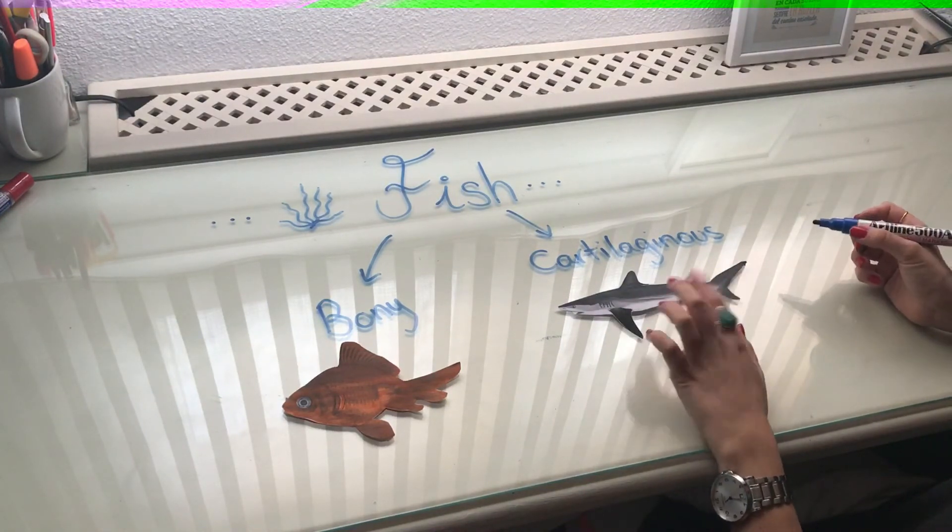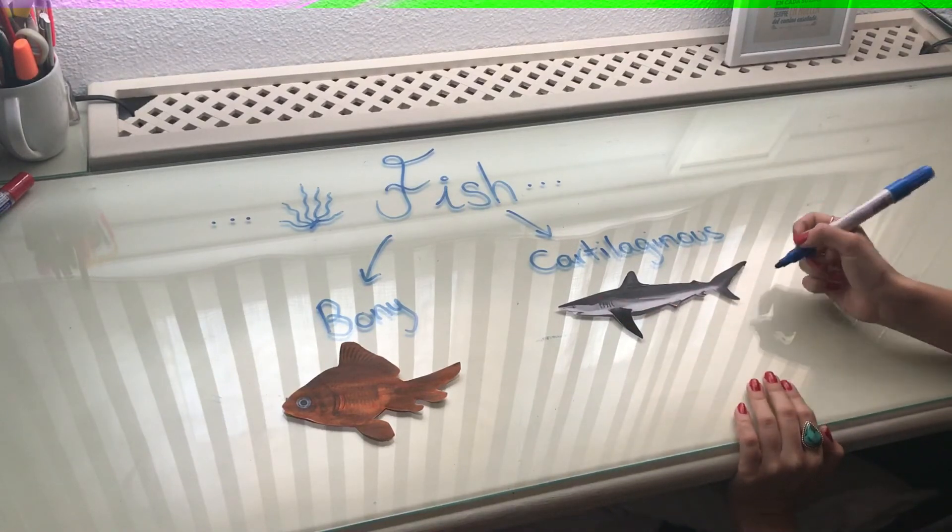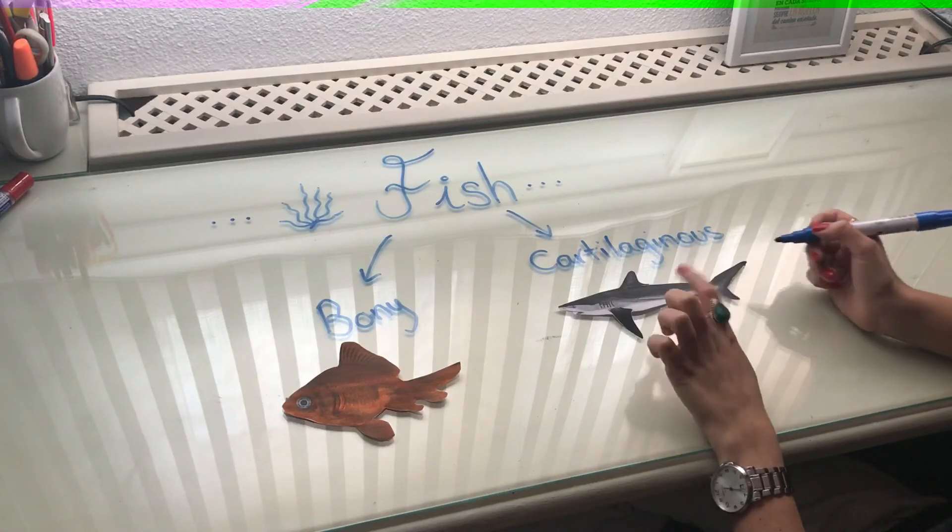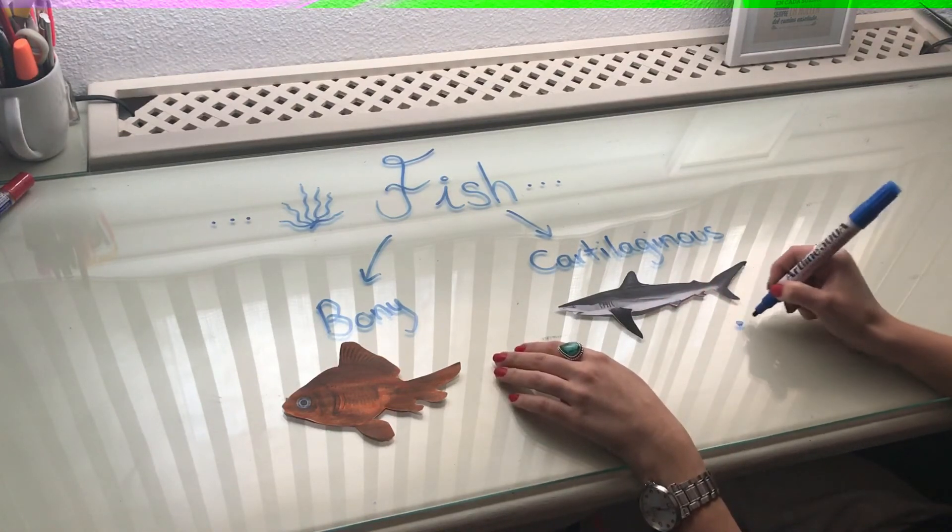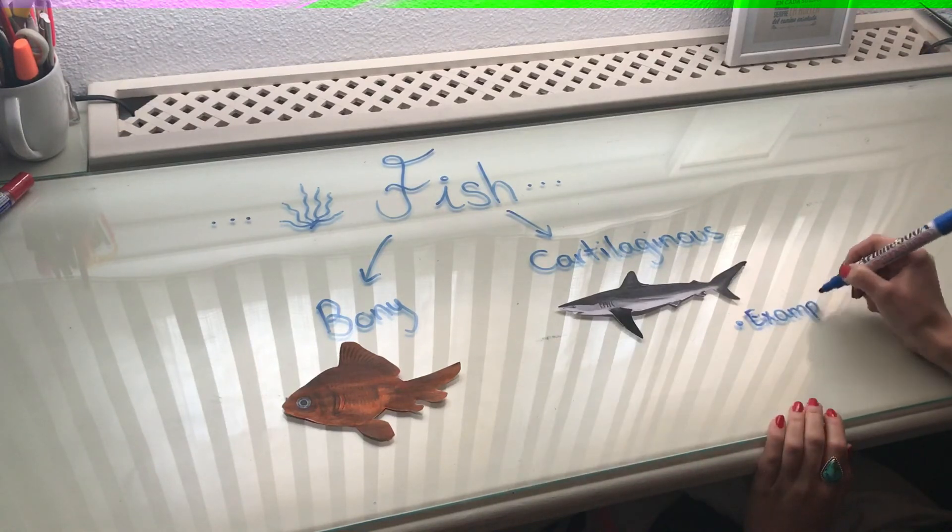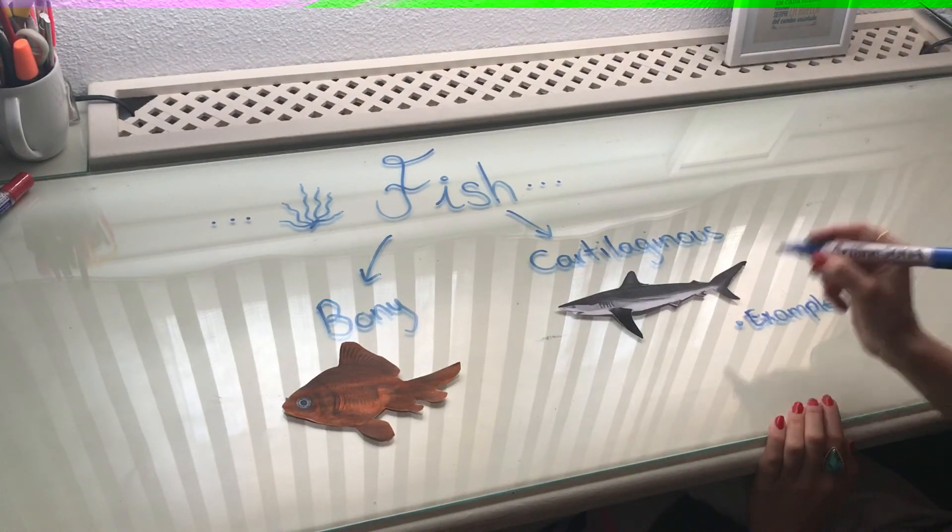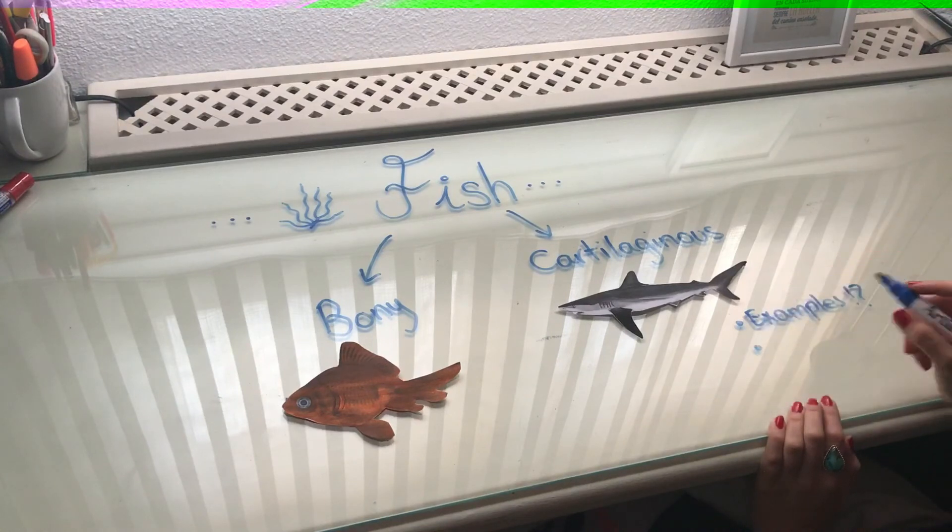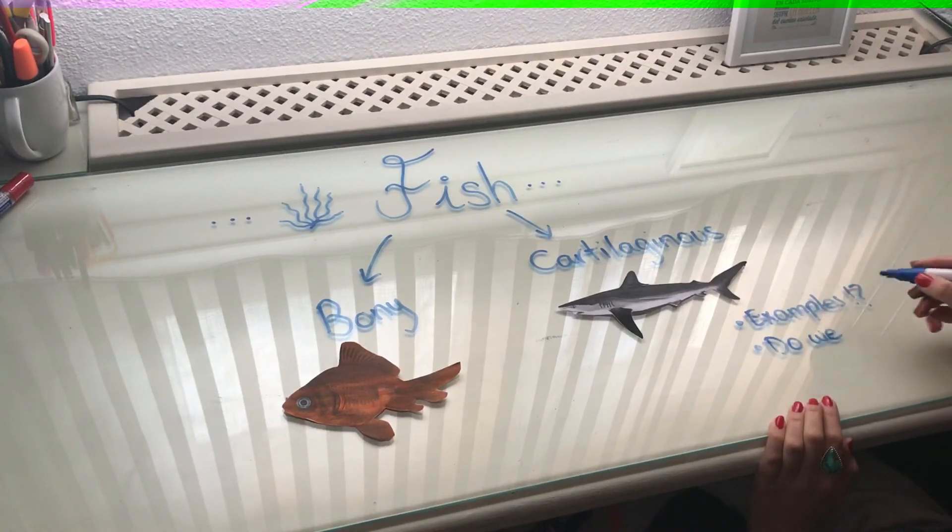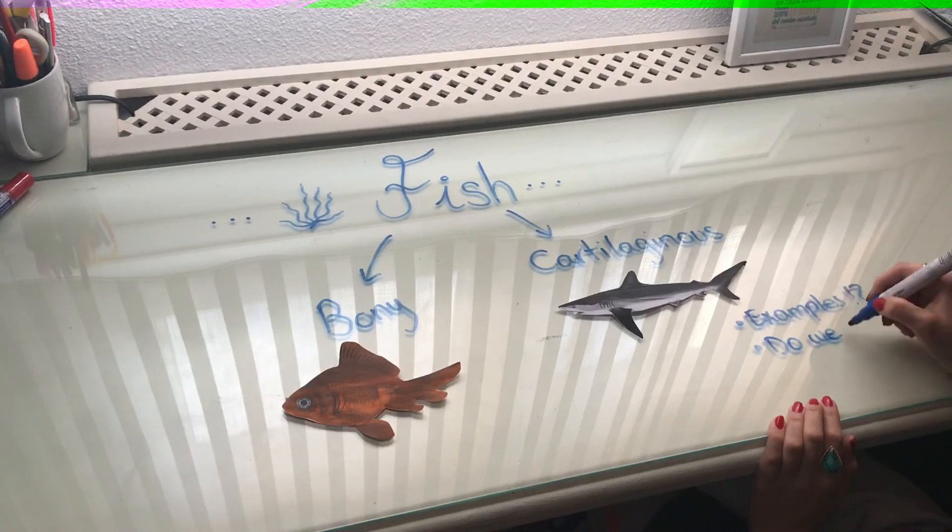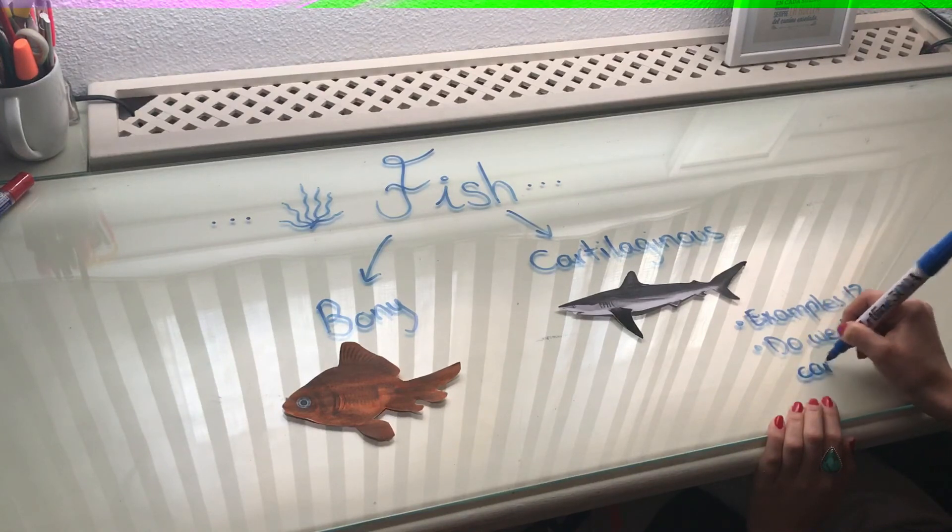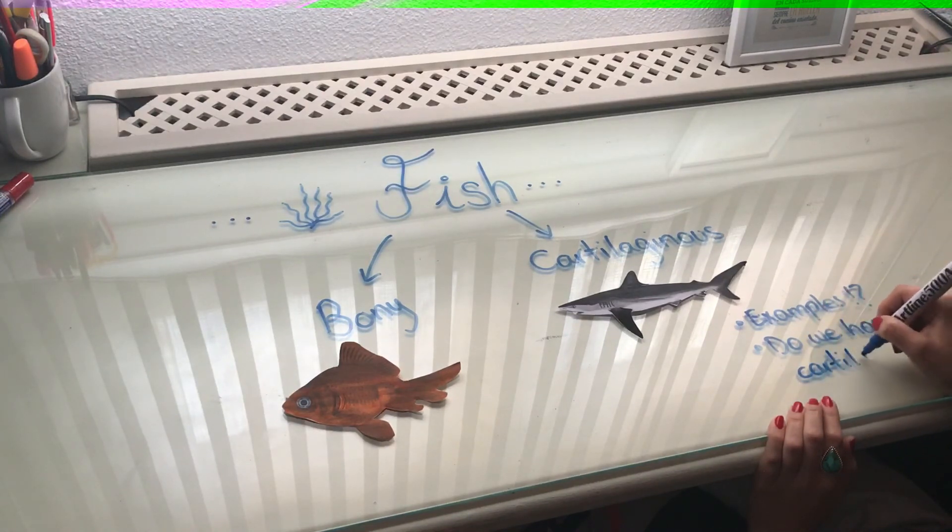But I want you to pay attention. You don't have to answer to me these questions. What other examples can you tell me of cartilaginous fishes? Can you tell me more examples? And second question, do we have cartilage in our body? Do we humans have cartilage? I want you to investigate. And you have to tell me tomorrow.